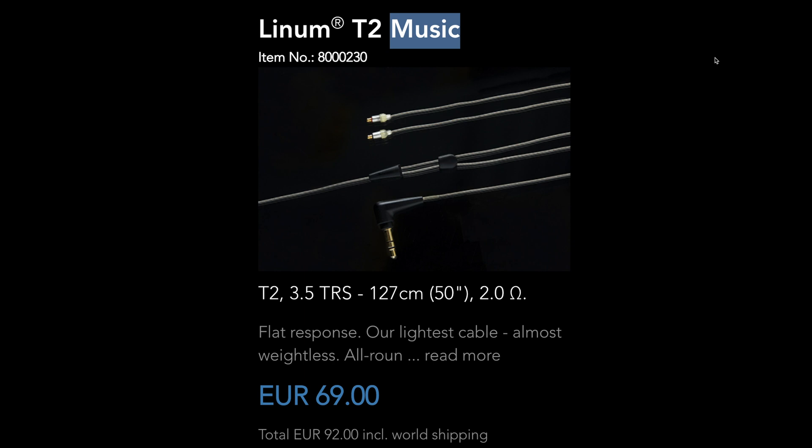let us use the Line MT2 music. We know that the length is 127 centimeters and that the impedance is 2 ohms. From this information, we can also calculate the width of the wire, assuming the connectors and solders are negligible.